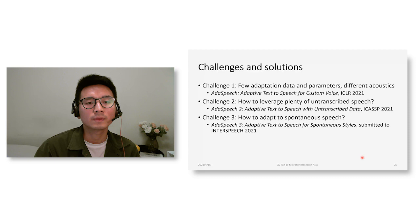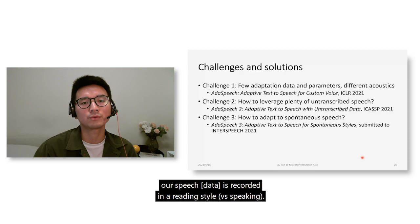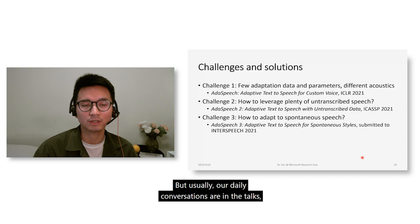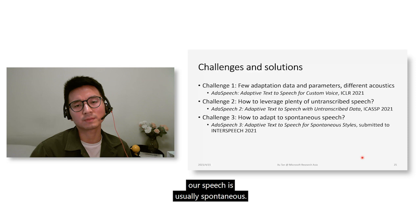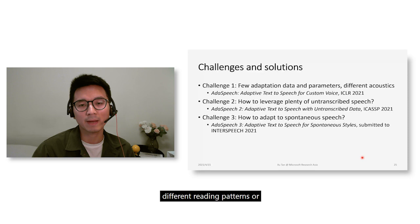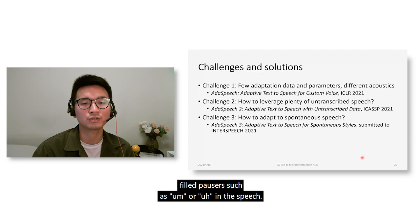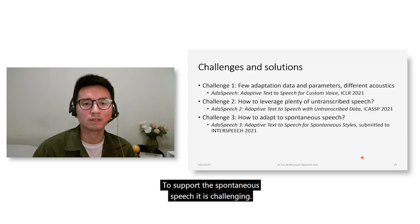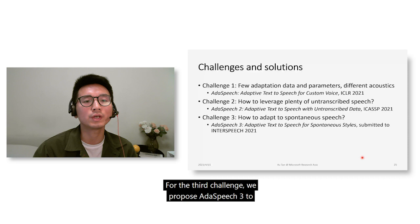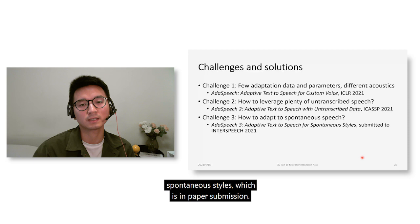The second challenge addressed by ADASpeech 2 is that we can easily obtain untranscribed speech from a user — for example, from online meetings or conversations — but not paired text and speech data. ADASpeech 2 proposes leveraging untranscribed speech for adaptation. The third challenge is that while TTS data is typically recorded in a reading style, daily conversations and podcasts are usually spontaneous, containing filler pauses such as 'um' or 'ah' and diverse prosody. ADASpeech 3 supports spontaneous style TTS.